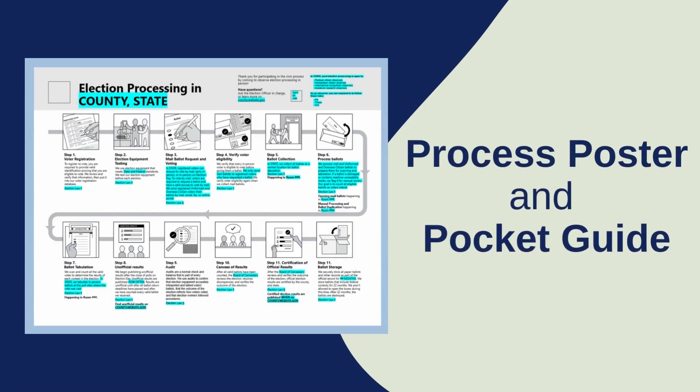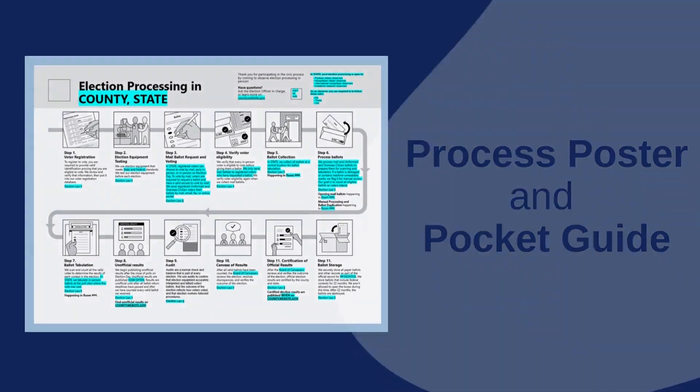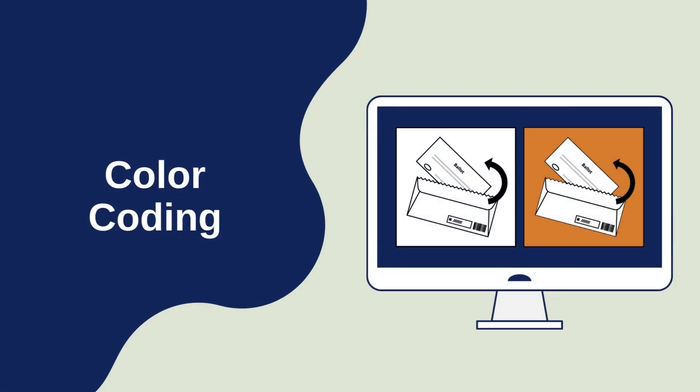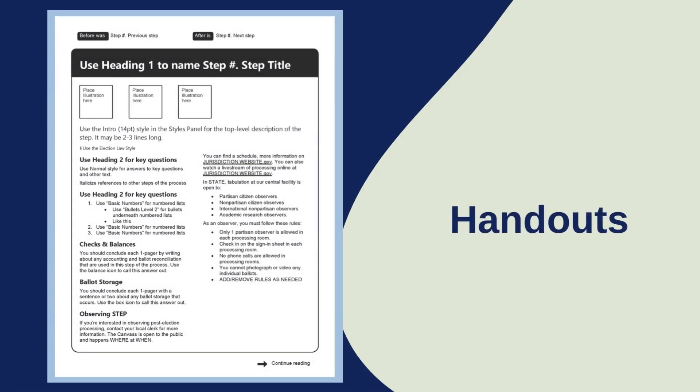Mid-sized jurisdictions may also have several conference rooms where post-election activities take place. You can print door signs to label which steps are taking place in each room or station. These signs can be color coded to match any color coding that the office is already using. You can also print handouts for these process steps to provide more information to observers.